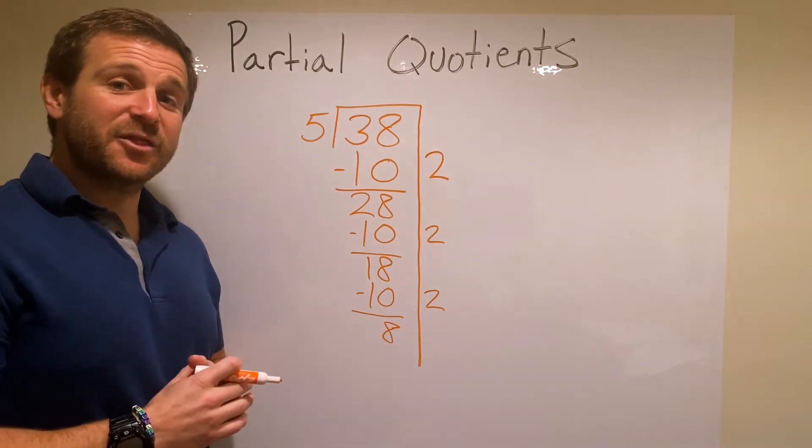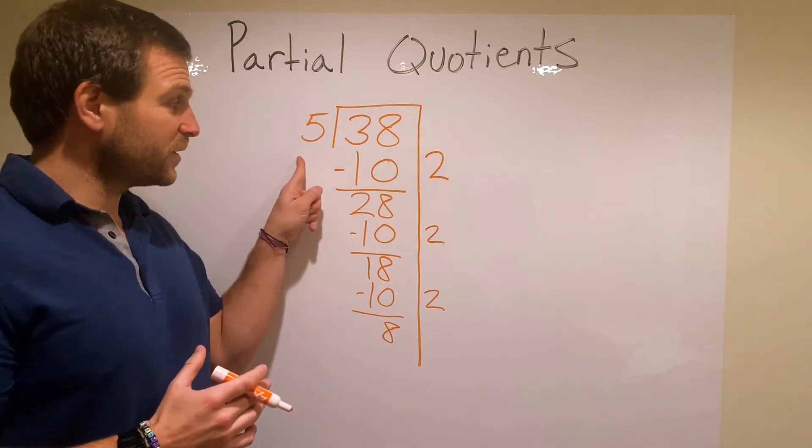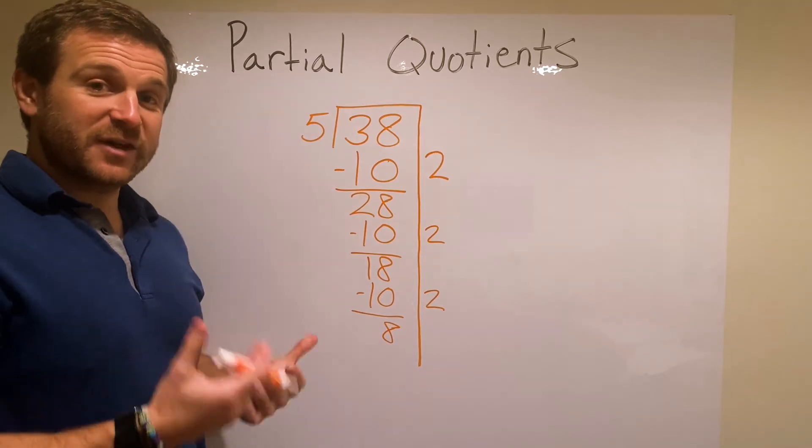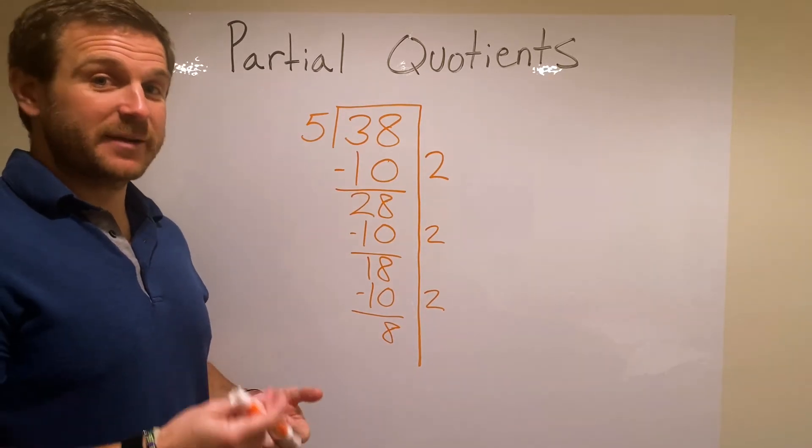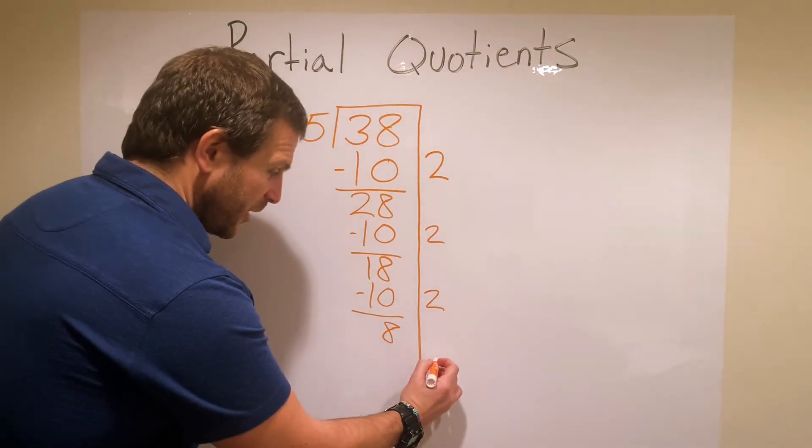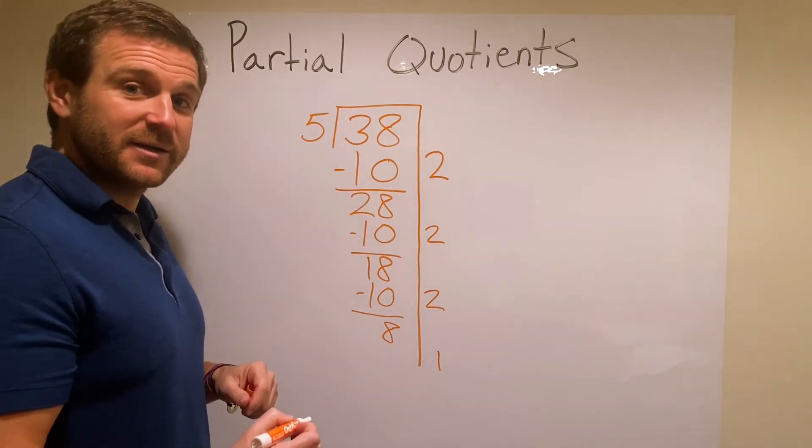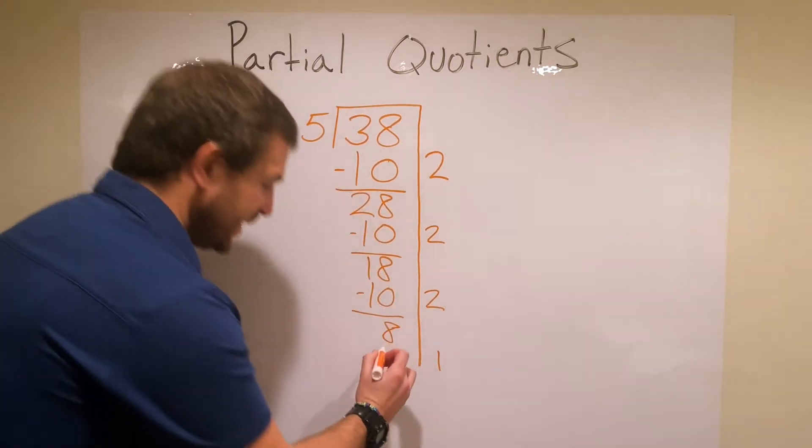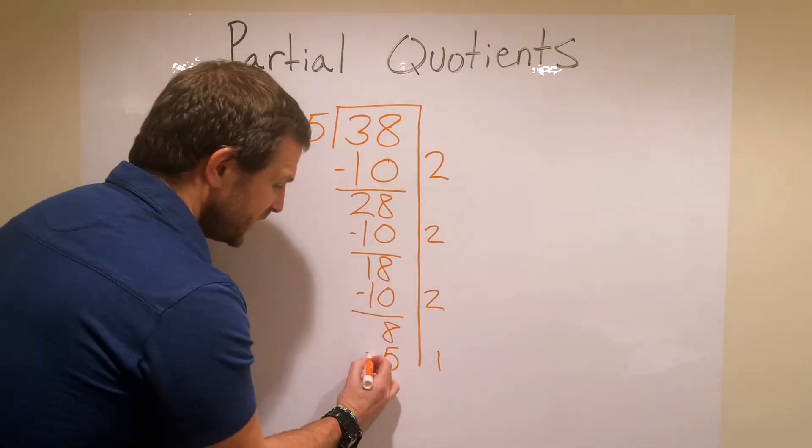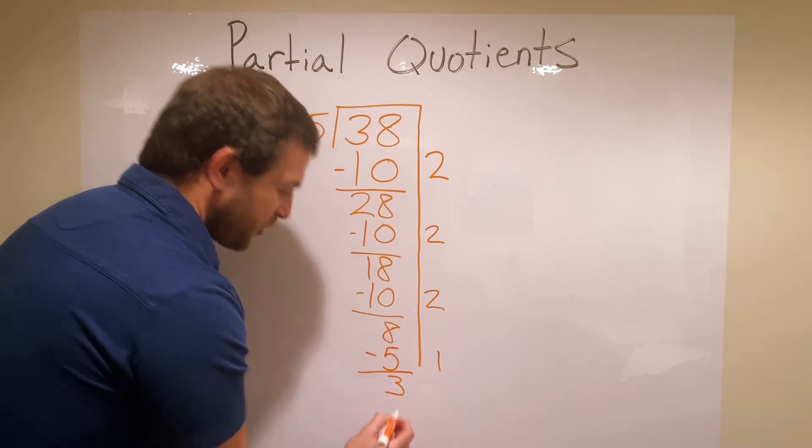So now I need to think, how many groups of 5 can I remove from 8? I can think of my basic multiplication facts: 5 times 1. I can remove 1 group of 5. So I put my 1 group of 5 here, and 1 group of 5 is 5. 1 times 5 is 5. Subtract it out and I get 3.